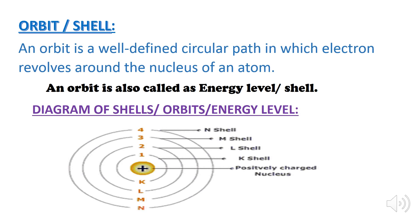An orbit is also called as energy level or shell. Here is a diagram of a shell. In the center there is a positively charged nucleus while outside there are different shells which are represented by K shell, L shell, M shell and N shell.